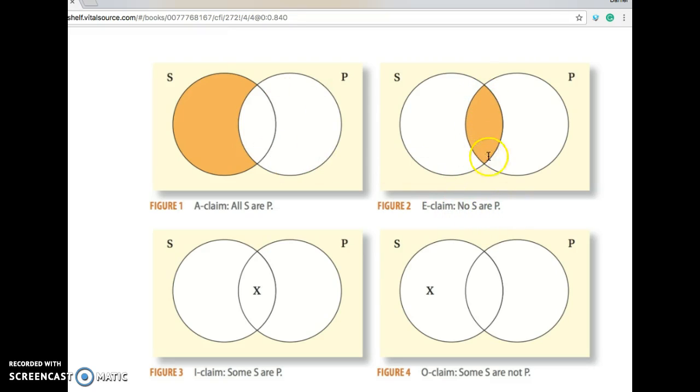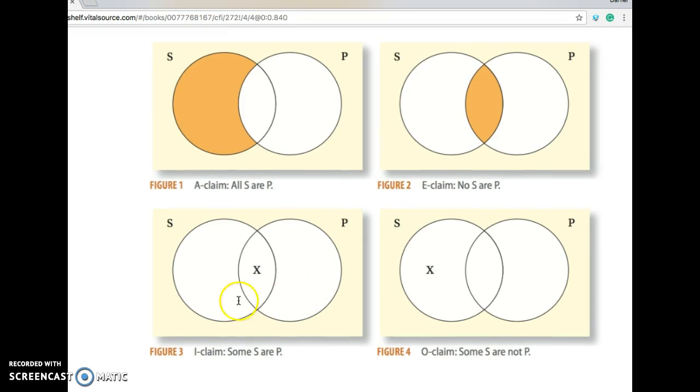There's nothing that's an S that's also a P, and conversely there's nothing that's a P that's also an S. Then finally here with our particular claims, some S are P, some S are not P, we just use an X.